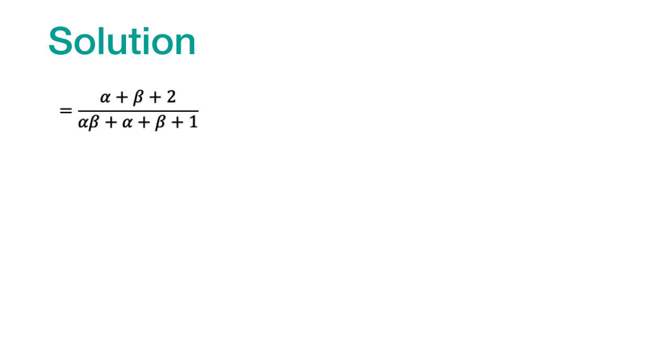Now, over here we know the value of alpha plus beta and also we know the value of alpha times beta. So we can just plug in to get this number. On simplification it becomes minus 1 divided by minus 5, which can be written as 1 fifth, and therefore the correct answer is option D.